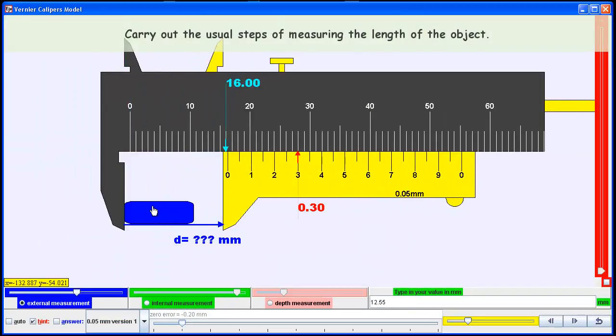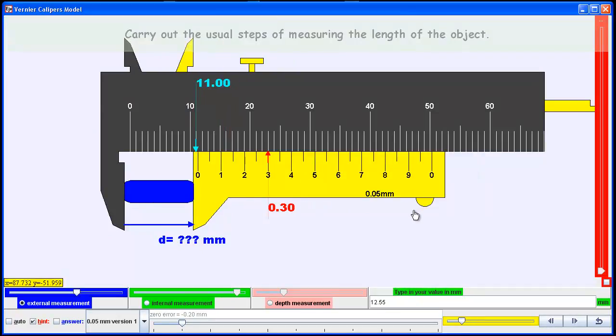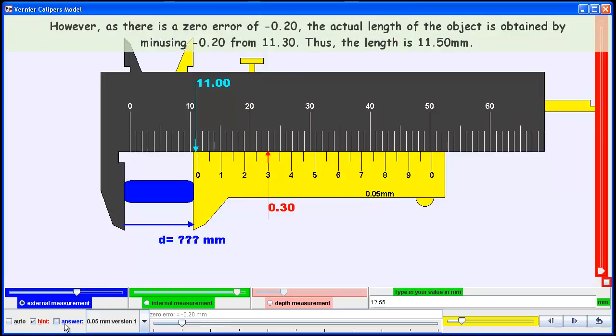When you open the jaws, put in the object, and take a new measurement, the main scale reads 11 plus 0.3. You need to subtract the zero error: 11 plus 0.3 minus negative 0.2 equals 11.50 mm as the correct answer.